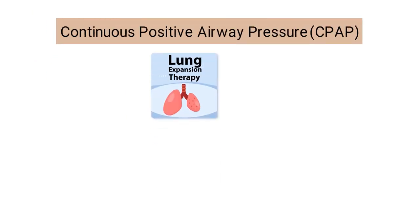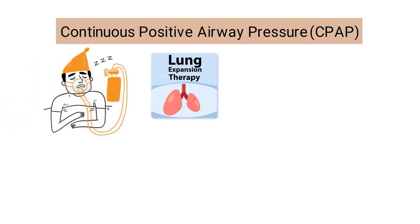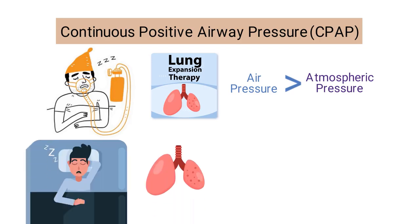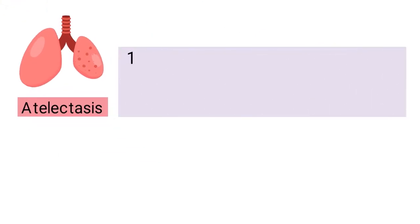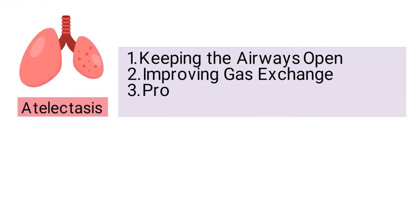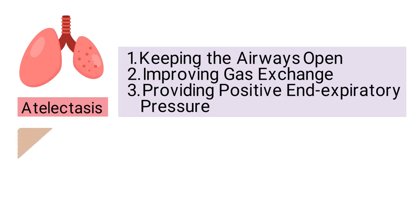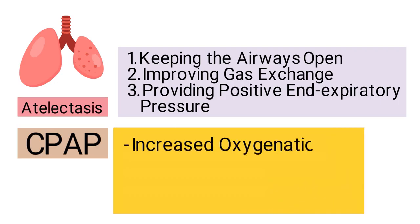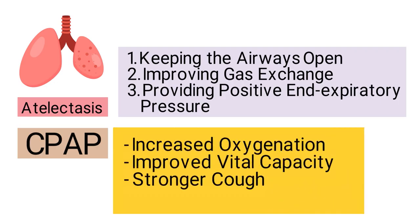CPAP is another type of lung expansion therapy. It's a technique in which a machine delivers air through a mask that covers the nose and mouth. The air pressure is adjusted so that it is slightly higher than atmospheric pressure. This technique is commonly used to treat sleep apnea but can also be used to treat atelectasis. CPAP helps prevent atelectasis by keeping the airways open, improving gas exchange, and providing positive end-expiratory pressure. Other potential outcomes include increased oxygenation, improved vital capacity, a stronger cough, and improved patient comfort.